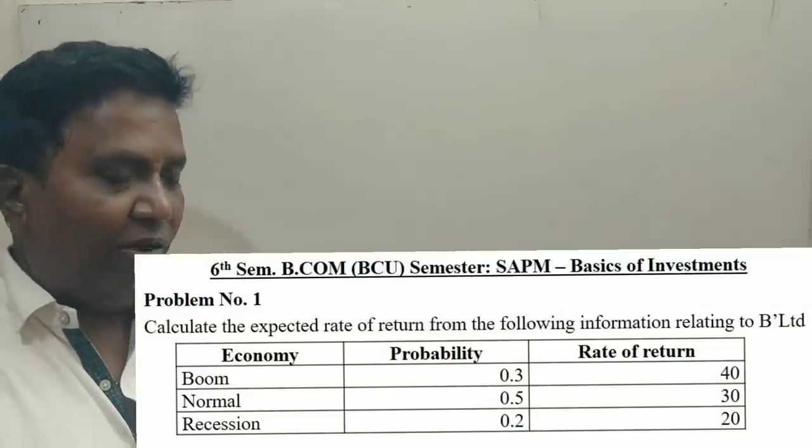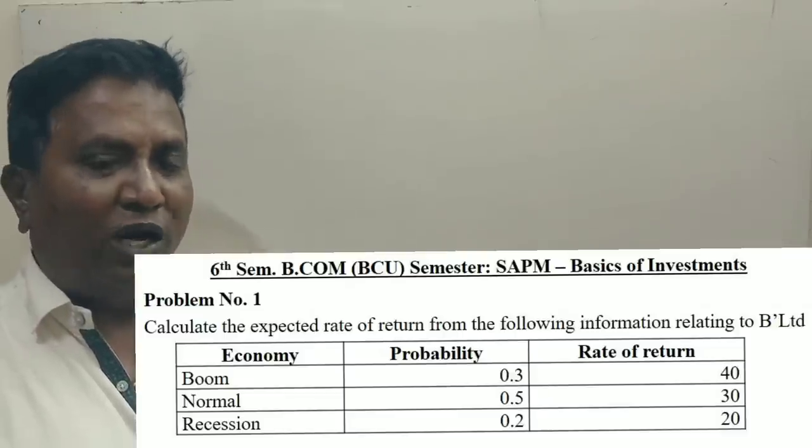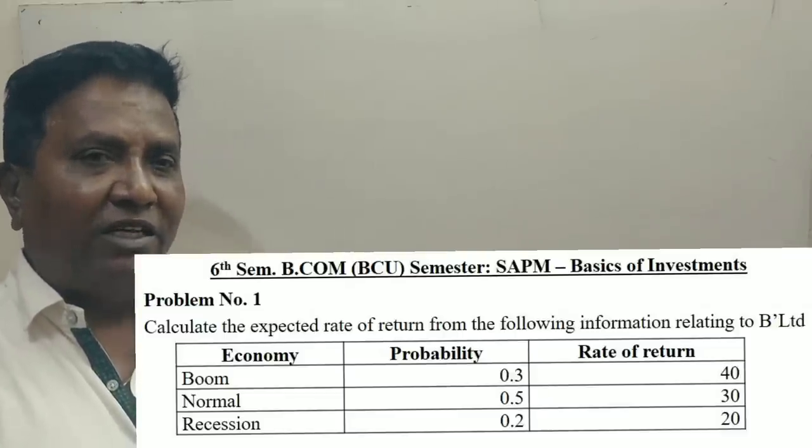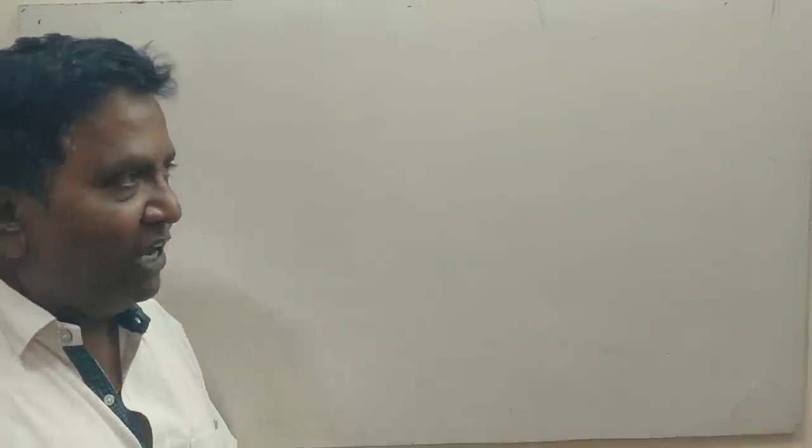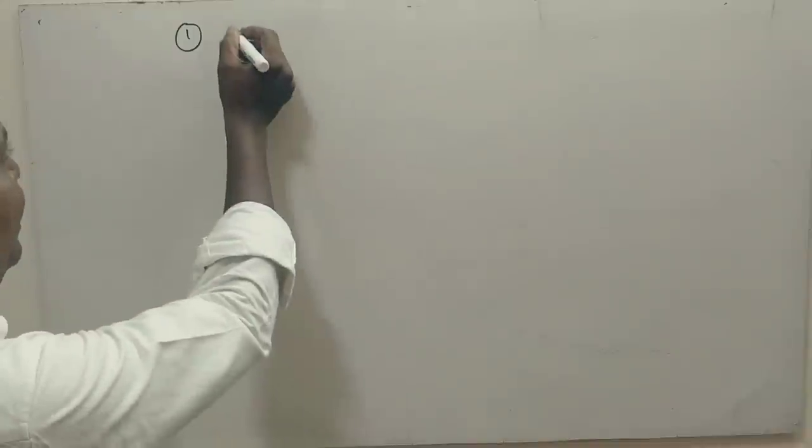What is the probability of occurrence of the returns? See, you get 40 rupees, 30 rupees, 20 rupees during the normal course of time. But, what is the probability of getting these returns? So, we have to find out what is the probability of getting the returns? That is, expected rate of return.